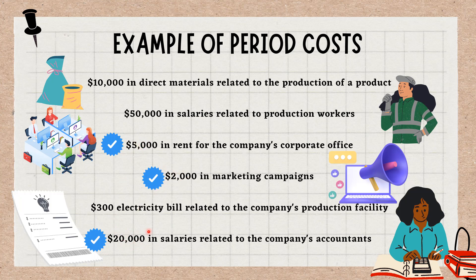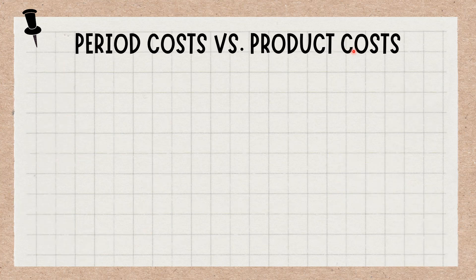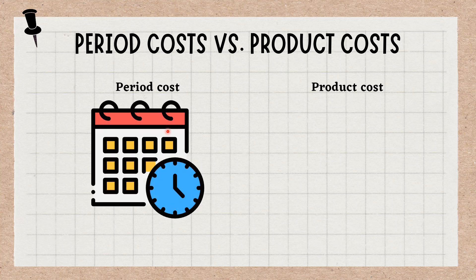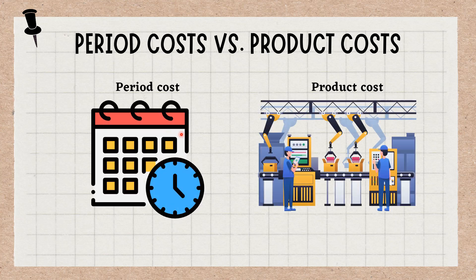Period Costs vs. Product Costs: Every cost incurred by a business can be classified as either a period cost or a product cost. A product cost is incurred during the manufacture of a product, while a period cost is usually incurred over a period of time, irrespective of any manufacturing activity.